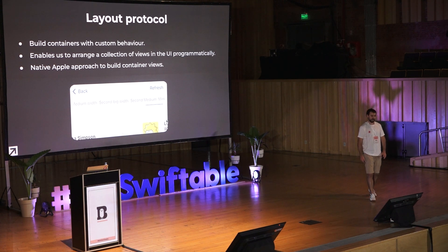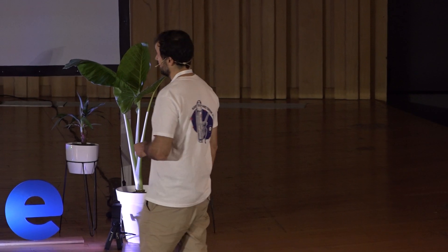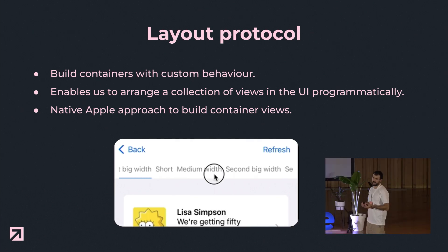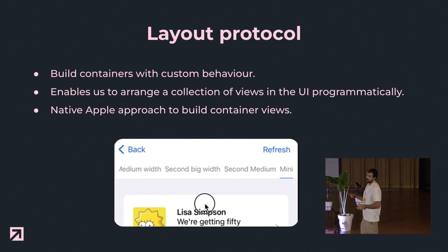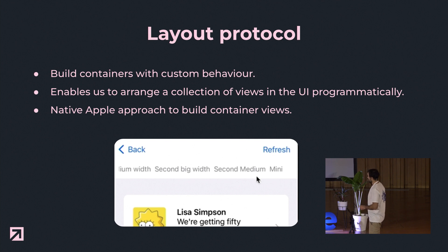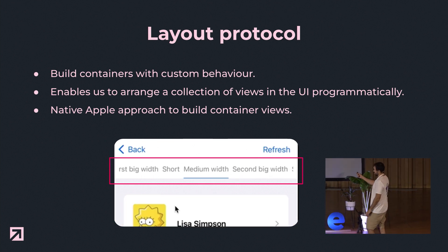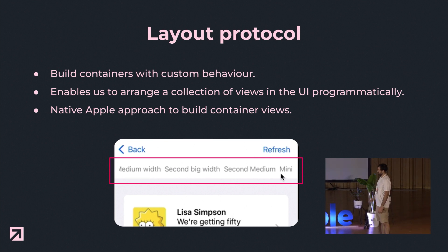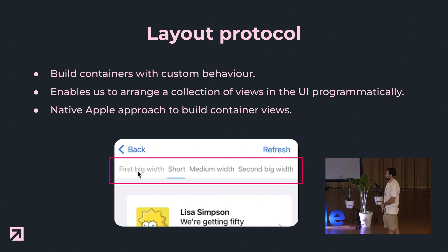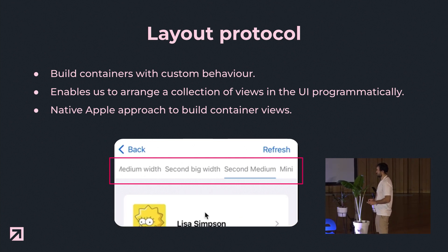Another technique to arrange views in the UI is using the Layout protocol. This is a feature that was just released by Apple in iOS 16. We are very familiar with several layout containers — for example, lazy horizontal stack, grids, vertical stack, and so on. All these containers use this approach. It's a native approach to arrange views on the screen. We use this technique to draw the view where we have each tab bar item and the indicator view. Each tab bar item is associated with a page, so we need to know the page information and arrange the indicator view according to the size of the tab bar item, the content offset, and other variables.